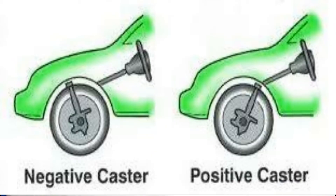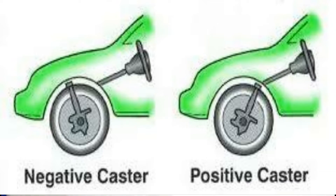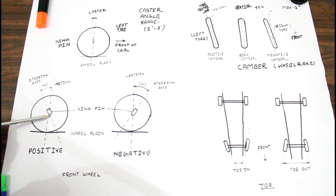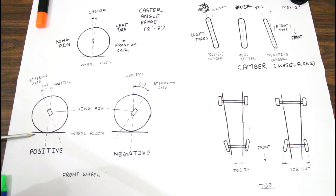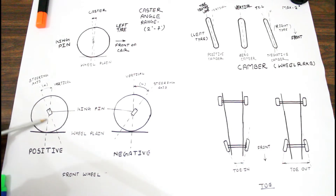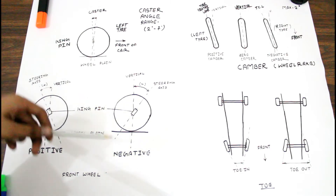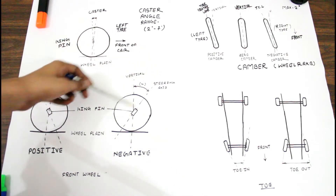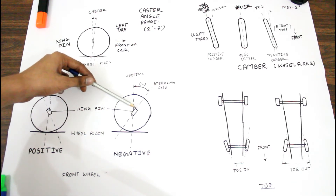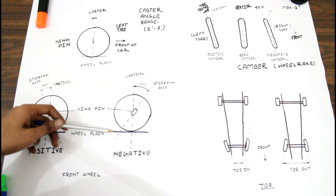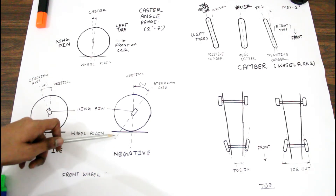There are two types of caster: positive caster and negative caster. For positive caster, the steering axis or the centre line of the kingpin meets ahead of the vertical line in the wheel plane — that is called positive caster. In the negative caster, the steering axis meets behind the vertical line in the wheel plane — that is called negative caster.